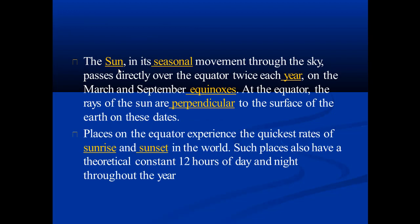The sun in its seasonal movement through the sky passes directly over the equator twice each year — in March and September, at the equinoxes. At the equator, the rays of the sun are perpendicular to the surface of the earth on these dates. Places on the equator also experience the quickest rates of sunrise and sunset in the world.